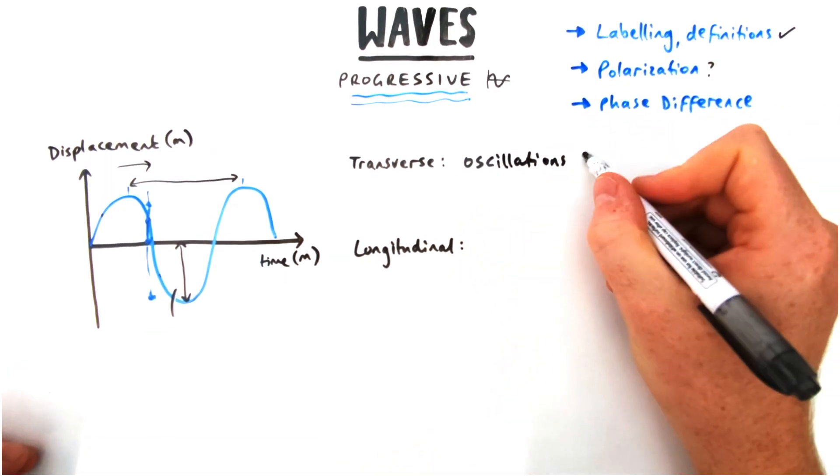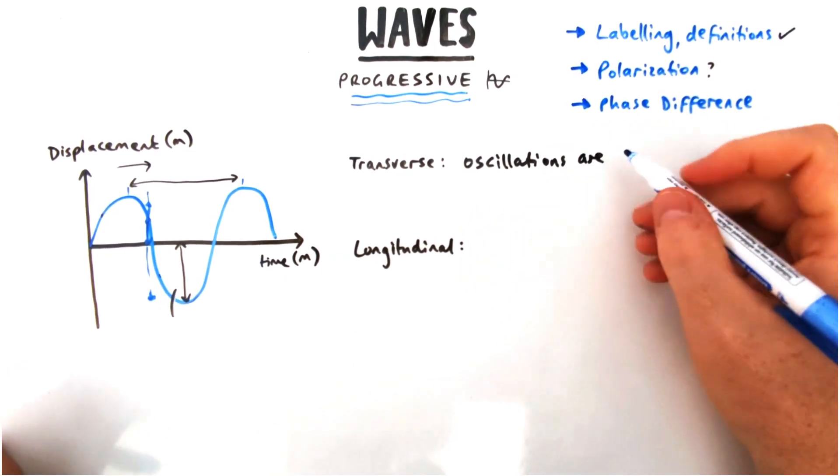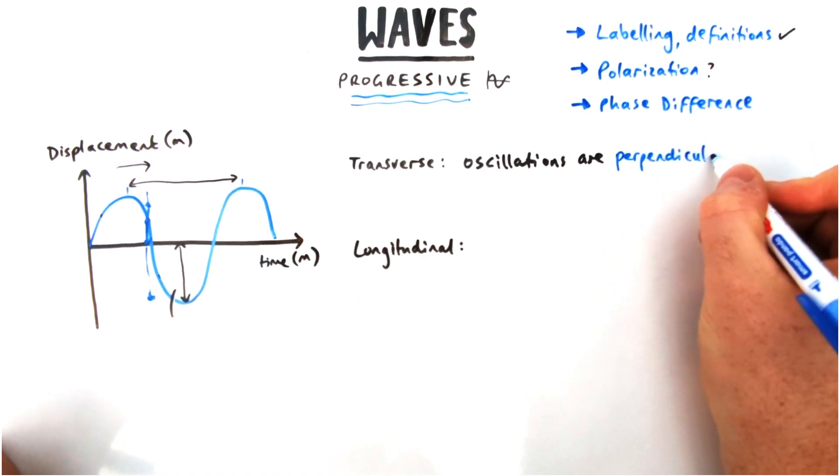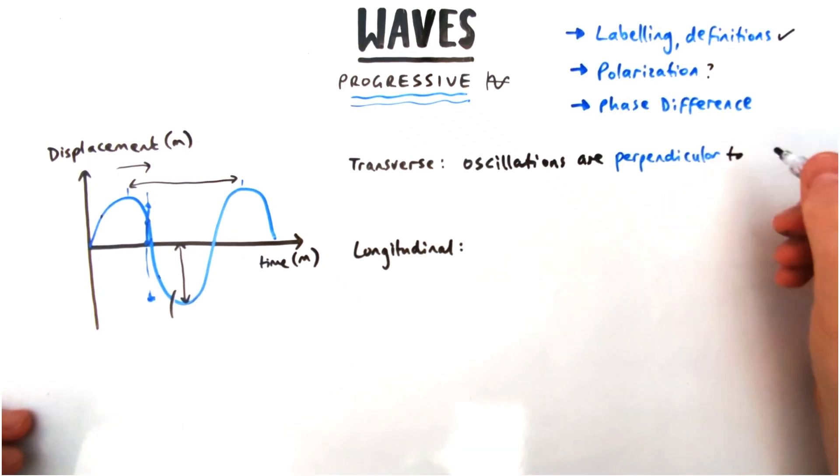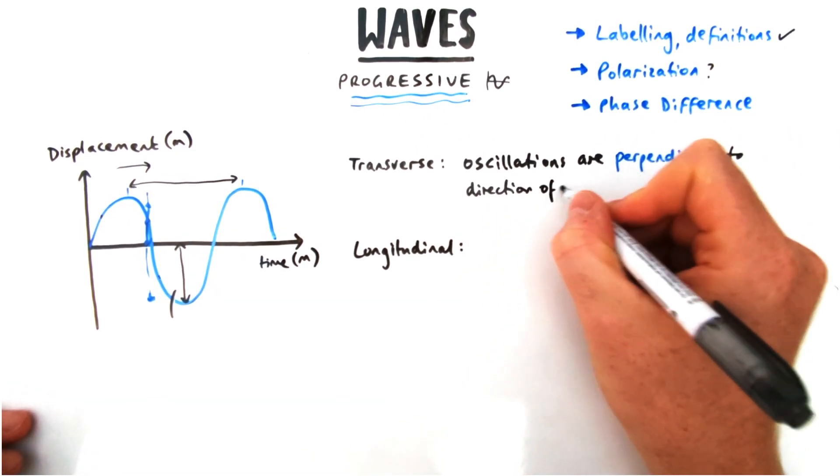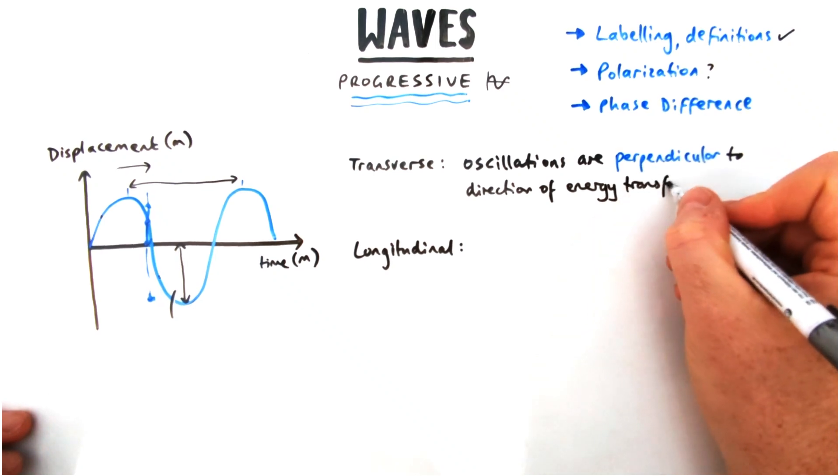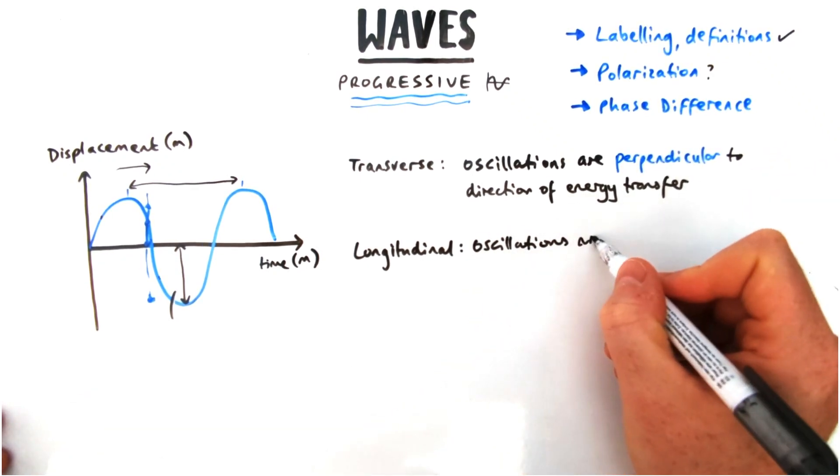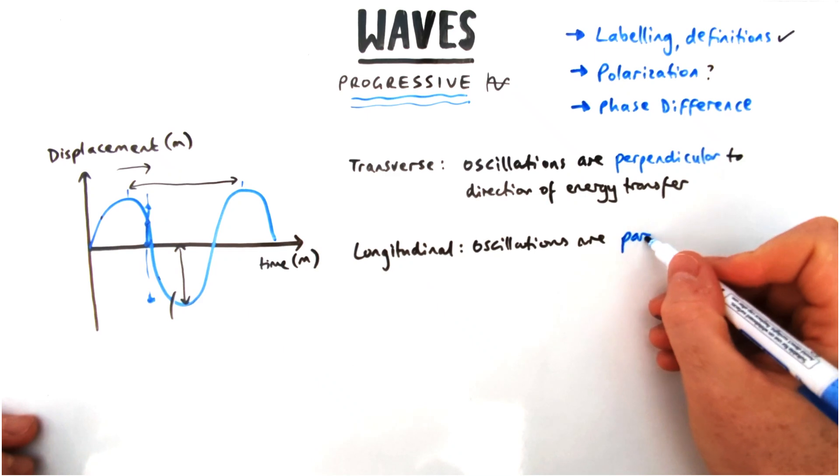Transverse waves means it has oscillations that cause the wave are perpendicular or right angles to the direction of energy transfer or to the direction of the propagation of the wave. For longitudinal, oscillations are parallel or in the same direction as the direction of energy transfer.